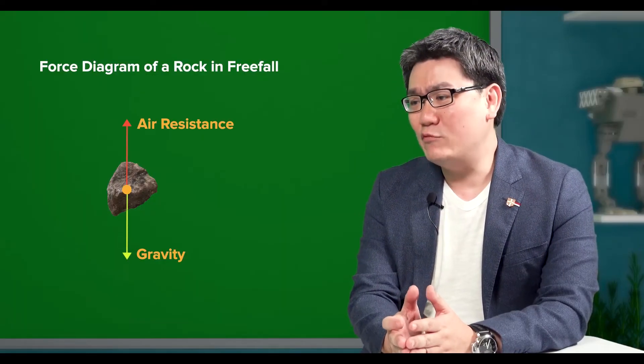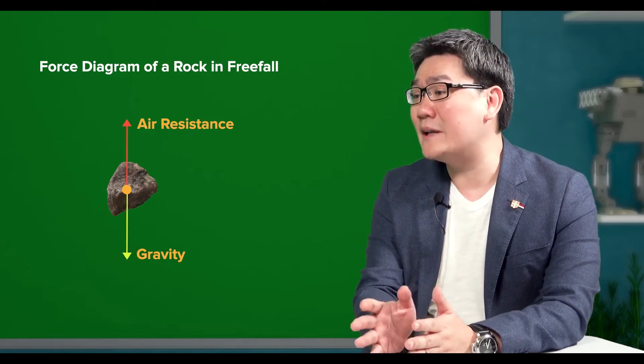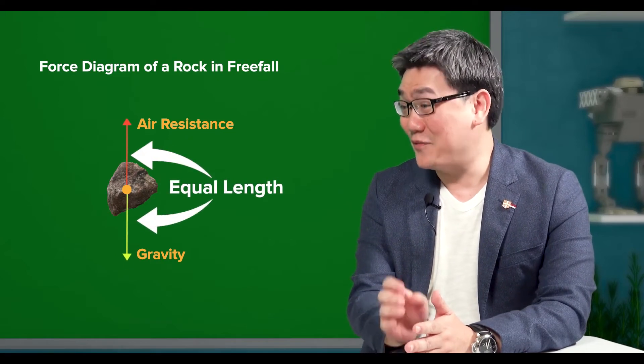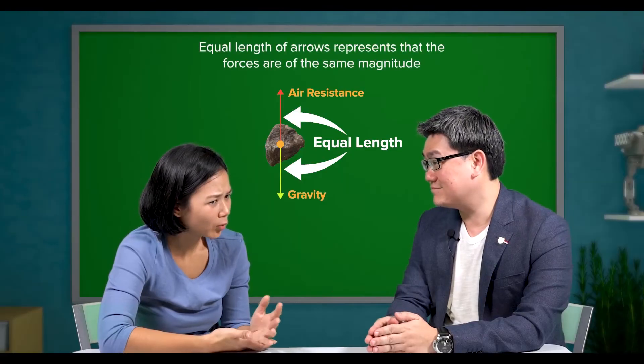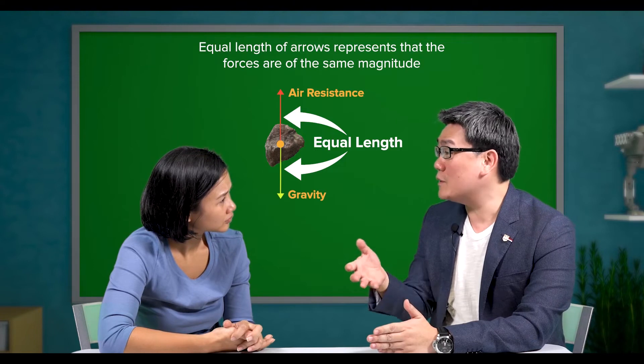As you can see, you can represent the forces acting on the rock as arrows and labelling them. Make sure that the two arrows are of equal length. Why equal length? To show that the forces are of equal magnitude.